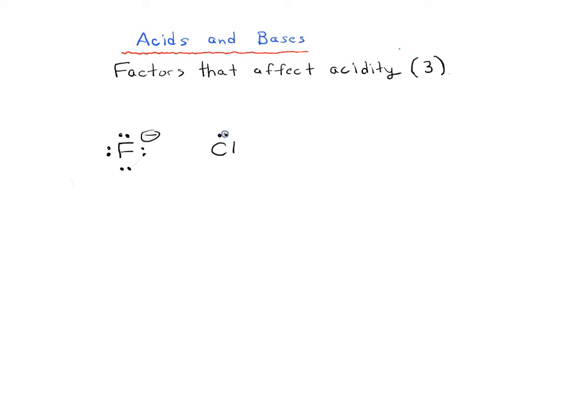So we'll take fluoride ion, and then chloride, and then bromide, and then iodide. I want to ask, how does the stability change between each of these four anions? Which one's the most stable, which one's the least stable?